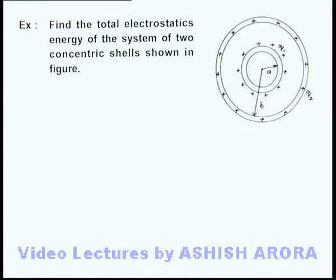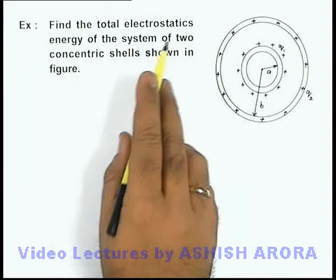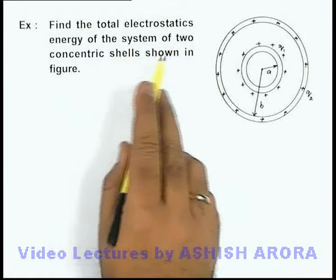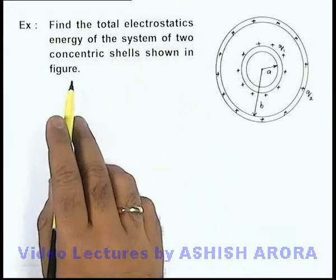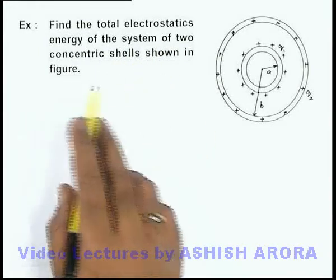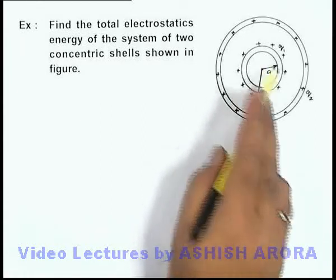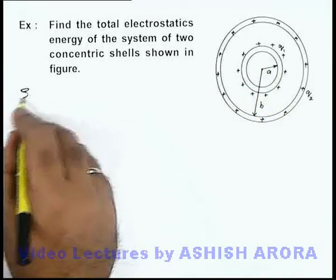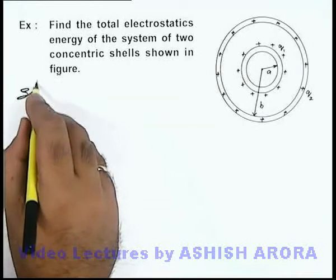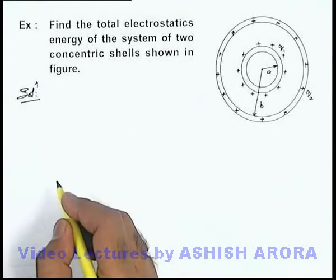In this example, we are required to find the total electrostatic energy of the system of 2 concentric shells shown in the figure. The shell radii are a and b, and the charges are q1 and q2. There are 2 ways to find out the total electrostatic energy of the system.